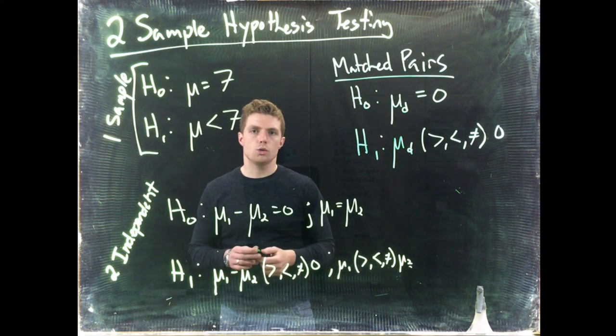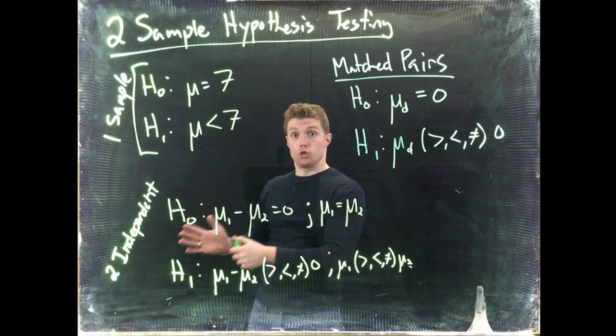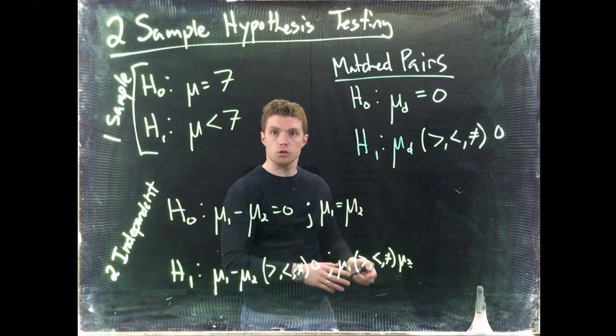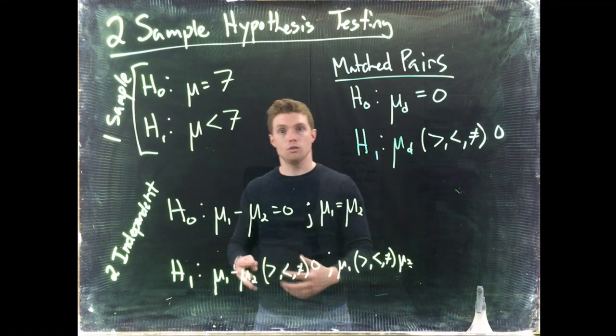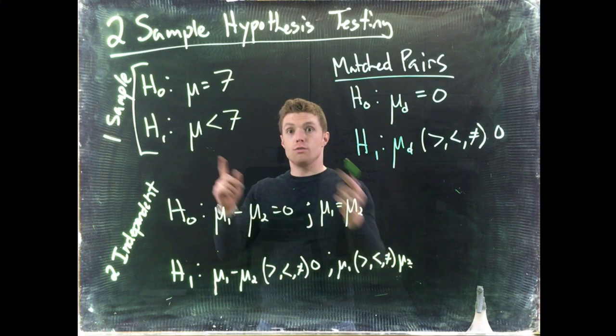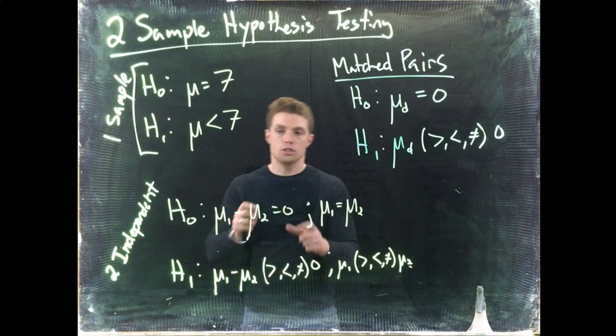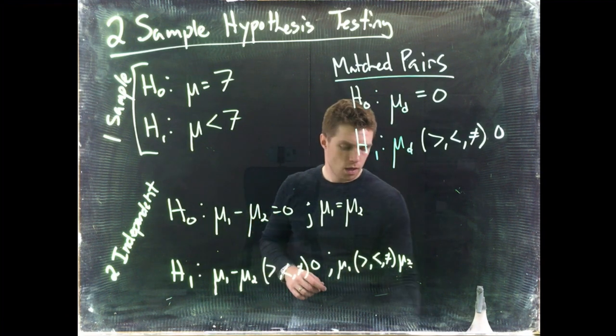So when we establish these equations, it's going to be really important to establish which group is μ1 and which group is μ2 so that by the time we reach our conclusions, the conclusions and the confidence interval statements that we're making actually reflect our original hypotheses. So it's always going to be a good thing to actually state out what is μ1 and μ2.